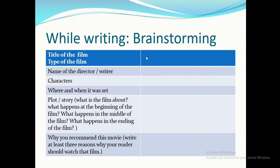For brainstorming, start with the title of the film. Then write the type of film — science fiction, action, romance, etc. Then the name of the director. If you're writing a book review, mention the name of the writer. Then the characters — the most important people in the story. Then where and when it was set: place (village, mountain, forest, city, country) and time (middle ages, 1998, etc.).